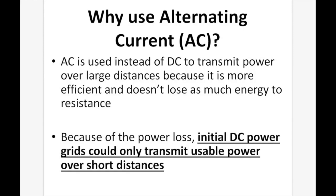But why do we use AC instead of DC for transmitting electricity over long distances? AC is used instead of DC to transmit power over long distances because it is more efficient and doesn't lose as much energy to resistance. Because of the power loss, initial DC power grids could only transmit usable power over short distances. DC was the first to market and was used to transmit power from power stations to homes, but so much electricity was lost that they came up with a new solution — alternating current.